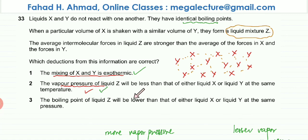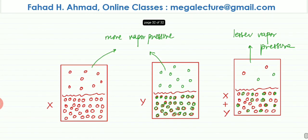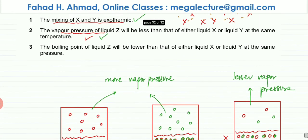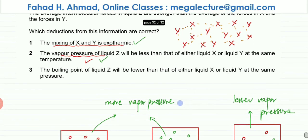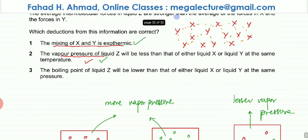The third deduction states that the boiling point of liquid Z will be lower than that of either liquid X or liquid Y at the same pressure. This is incorrect. In liquid Z the particles attract each other more strongly, so more energy is needed to boil it. The stronger intermolecular forces mean liquid Z actually has a higher boiling point.